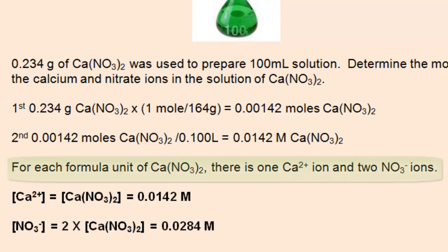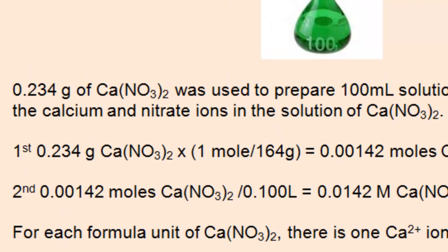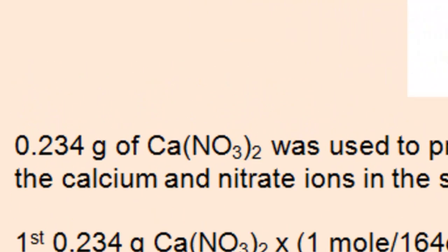Finally, we can calculate the concentration of each constituent ion. To do this, look at the formula and find out how many of each ion are in the formula. There's one calcium in the formula and there are two nitrates.